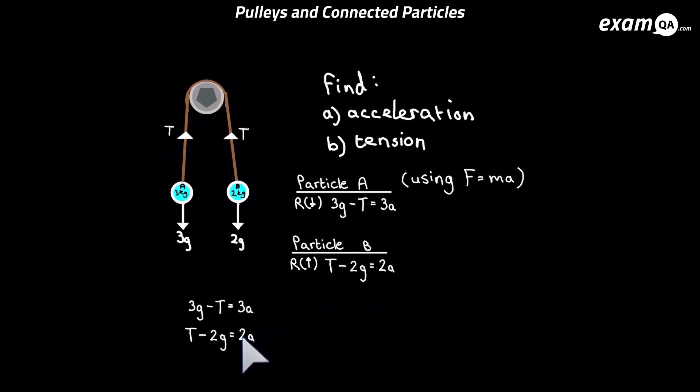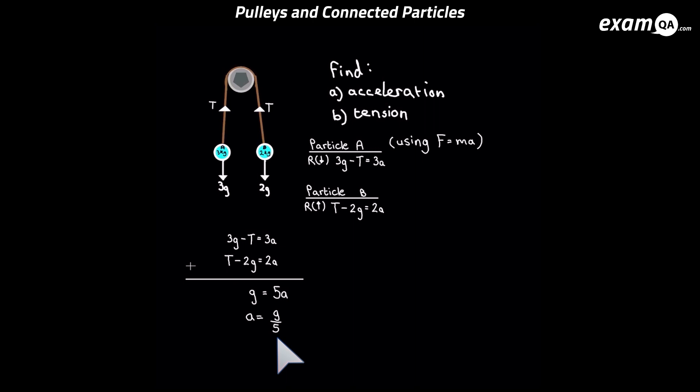Now again, one of the equations got minus T and one's got positive T, so we'll simply add them. That gives us acceleration as G over 5. Now we can put that back into any of the two equations to help work out tension. You should be able to do this step simply, and you get tension as 12 over 5 G. You can leave it like this or you can put G as 9.8. It's up to you. And there we have it.